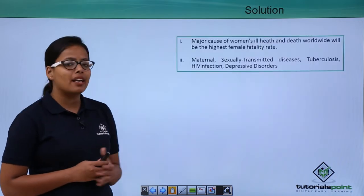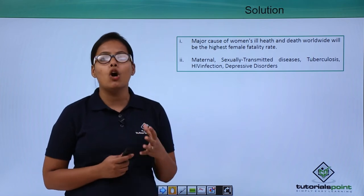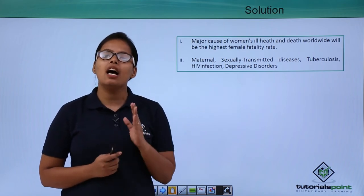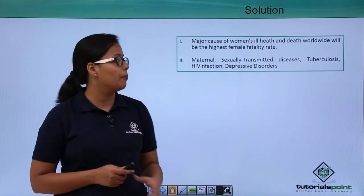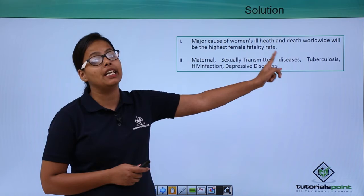From the bar graph, you can easily see that the major cause is reproductive health conditions because the female fertility rate is highest for this category. So the major cause of women's ill health and death worldwide is the one with the highest female fertility rate.